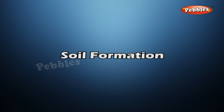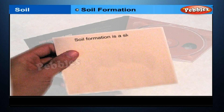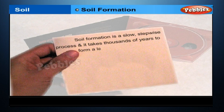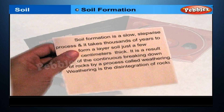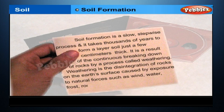Soil formation is a slow, step-wise process and it takes thousands of years to form a layer of soil just a few centimetres thick. It is a result of the continuous breaking down of rocks by a process called weathering. Weathering is the disintegration of rocks on the earth's surface caused by exposure to natural forces such as wind, water, frost, roots of plants, etc.